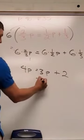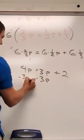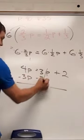I'm going to move all my variables to the same side. I'm going to subtract 3p. 4p minus 3p is just 1p. Those cancel.